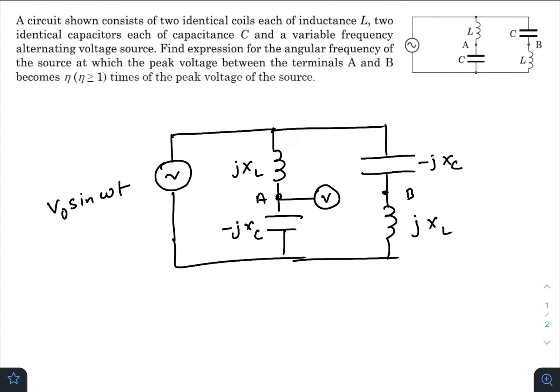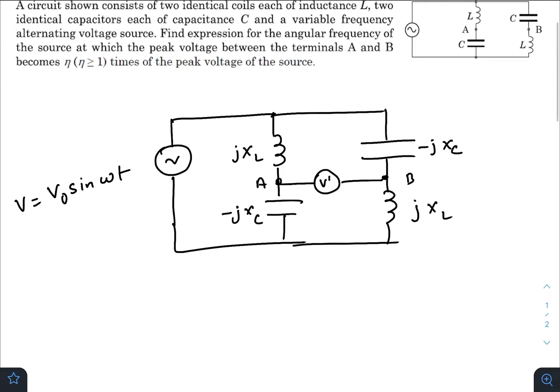If we connect a voltmeter here, let the reading of the voltmeter be V'. This one is V. If we consider here a zero potential, here it will be V. So the potential drop across these two branches are the same.